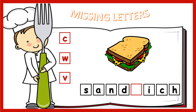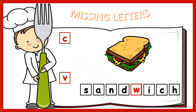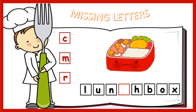It's a sandwich. You will choose C, W, or V. Let's spell it! S, A, N, D, W, I, C, H. And we choose W. Very good! Come to the last one — 'lunch box.' What is the missing piece? And C is the right answer here. Very nice!